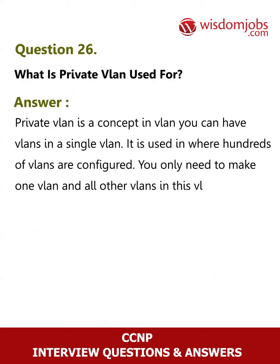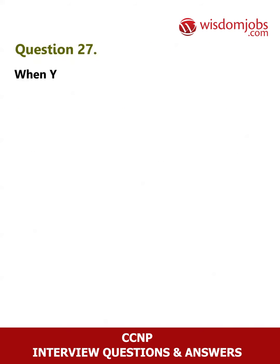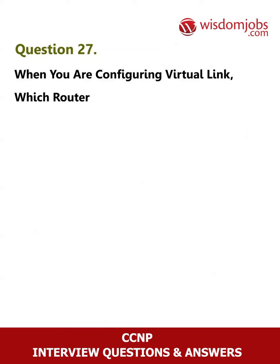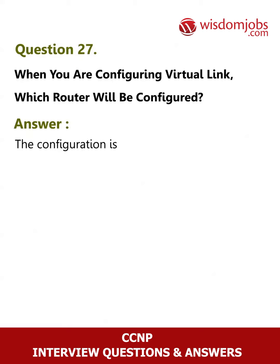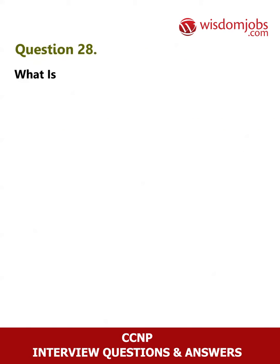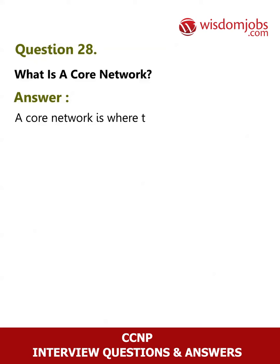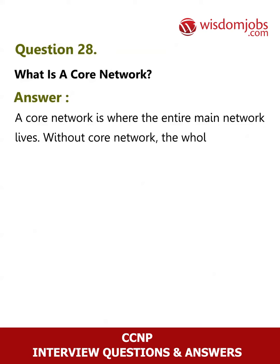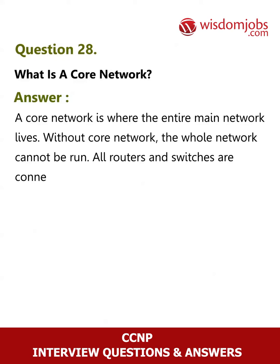Question 27: When you are configuring a virtual link, which router will be configured? Answer: The configuration is between ABR routers. Question 28: What is a core network? Answer: A core network is where the entire main network lives — without a core network, the whole network cannot run.